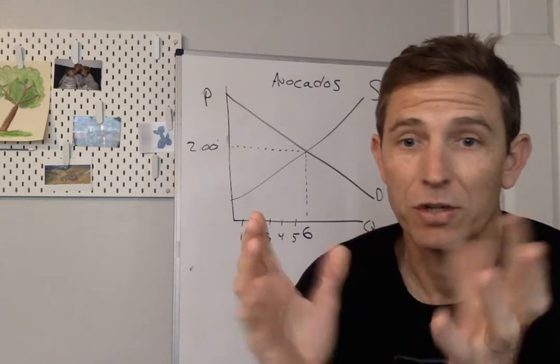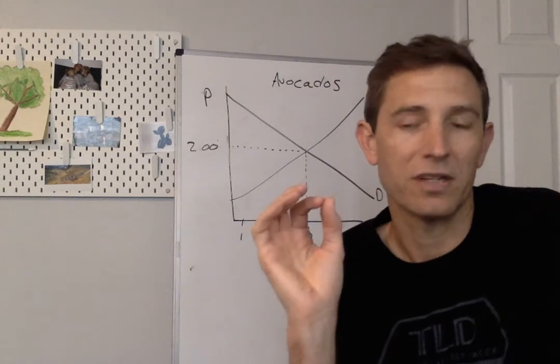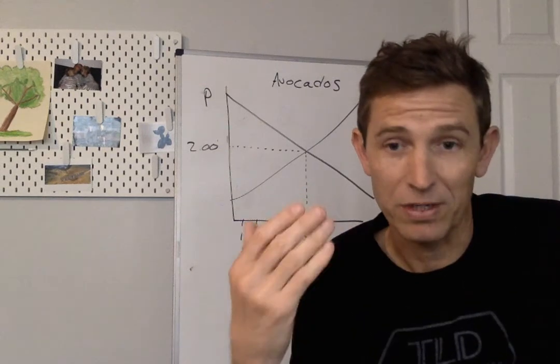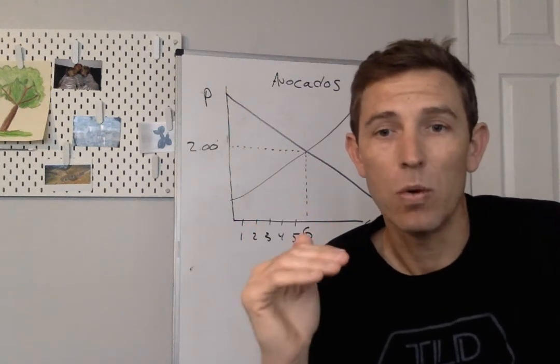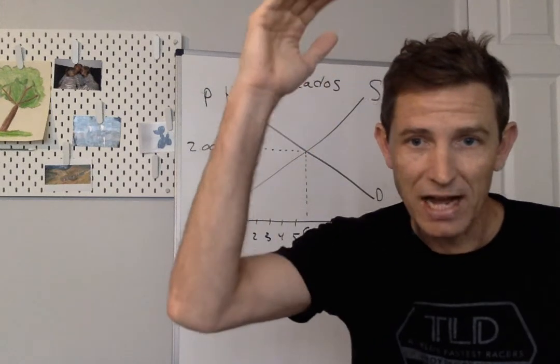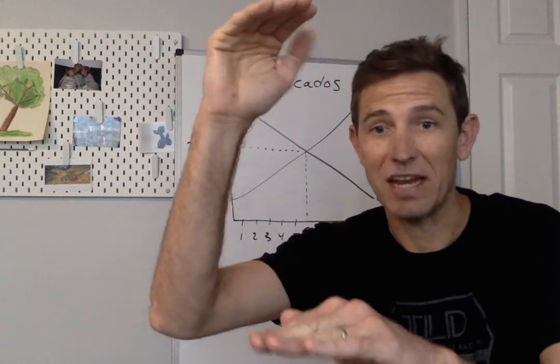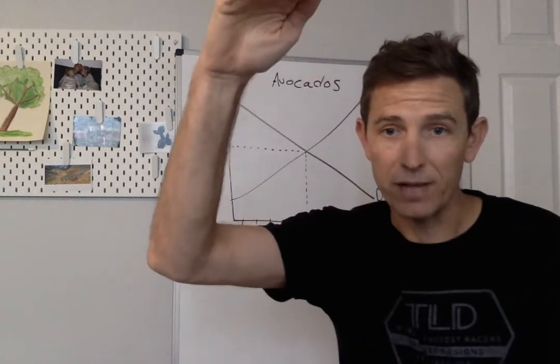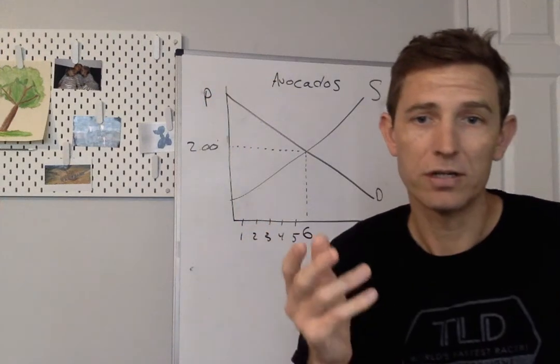First things first, we want to make sure what is consumer surplus. Remember in our previous video, consumer surplus takes place when a buyer is able to get something at a price that's lower than the most they'd be willing to pay. You value something really high, you would be willing to pay a lot, but you pay something less than that. That difference between what you would pay and what you have to pay is called consumer surplus.